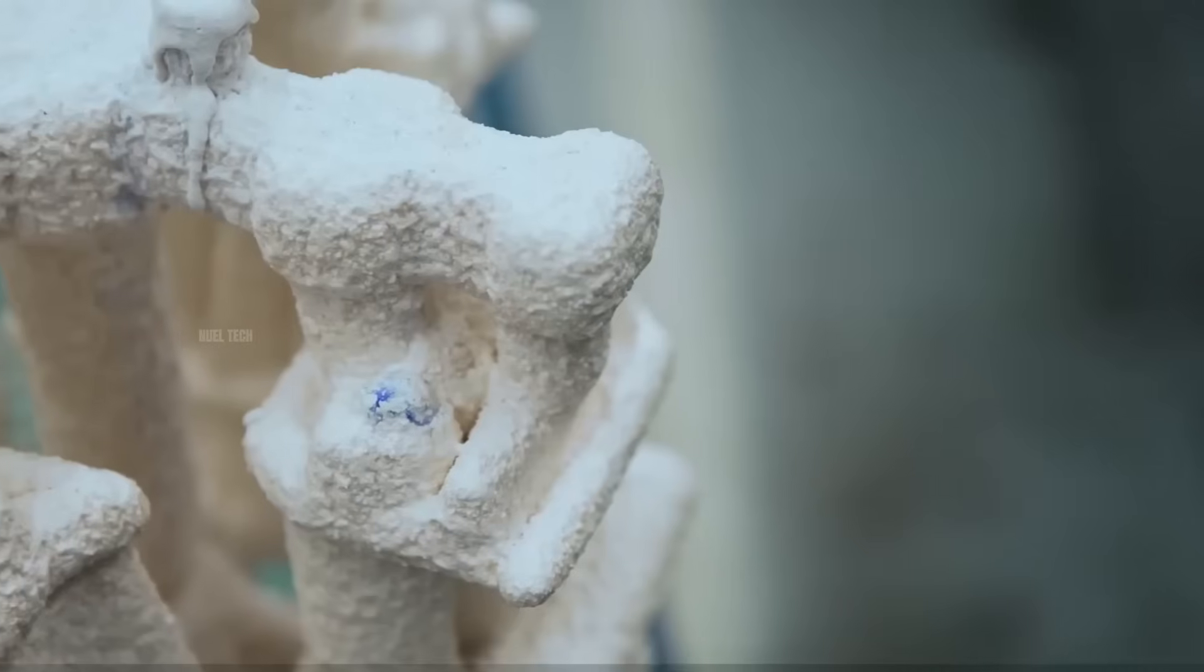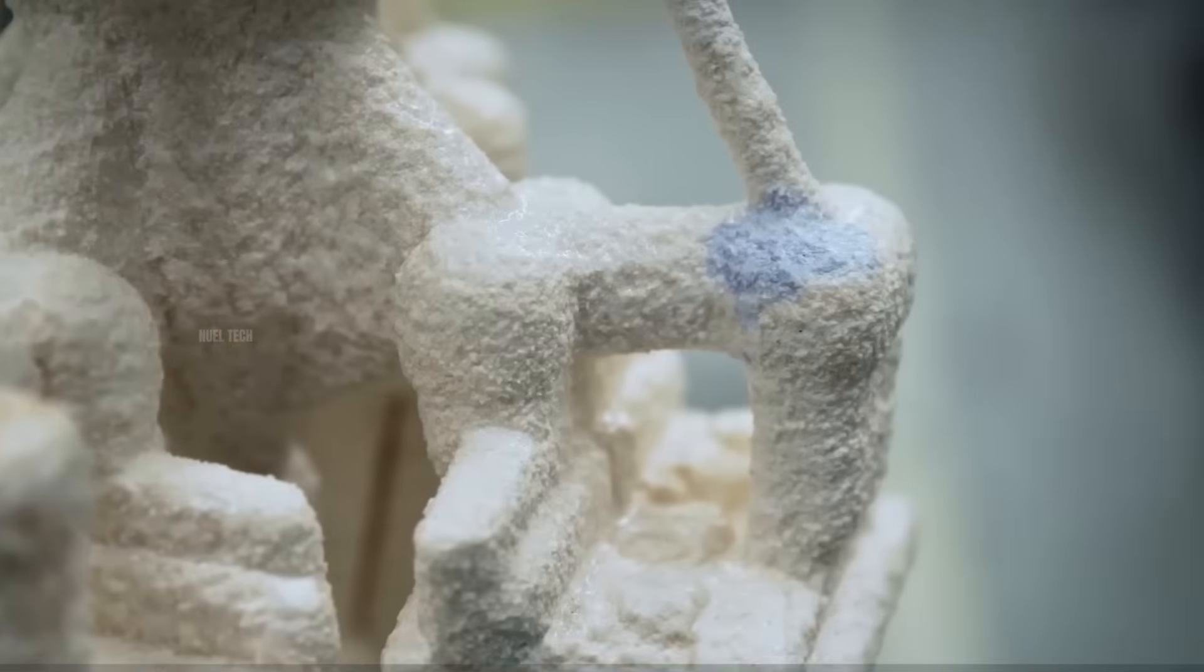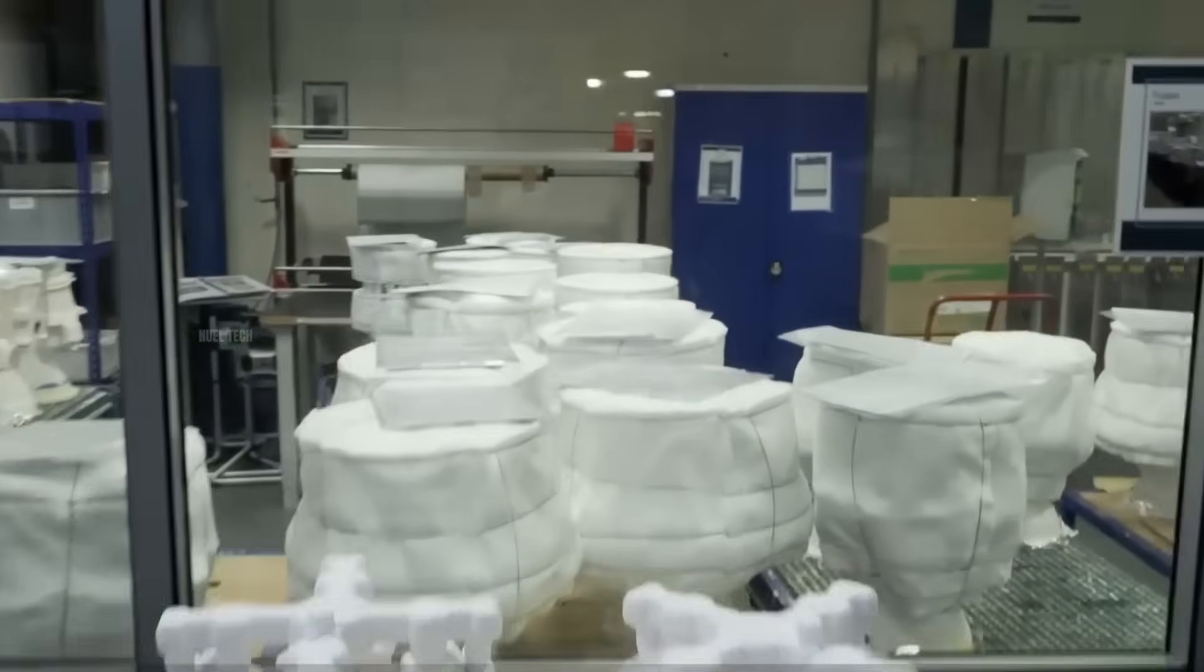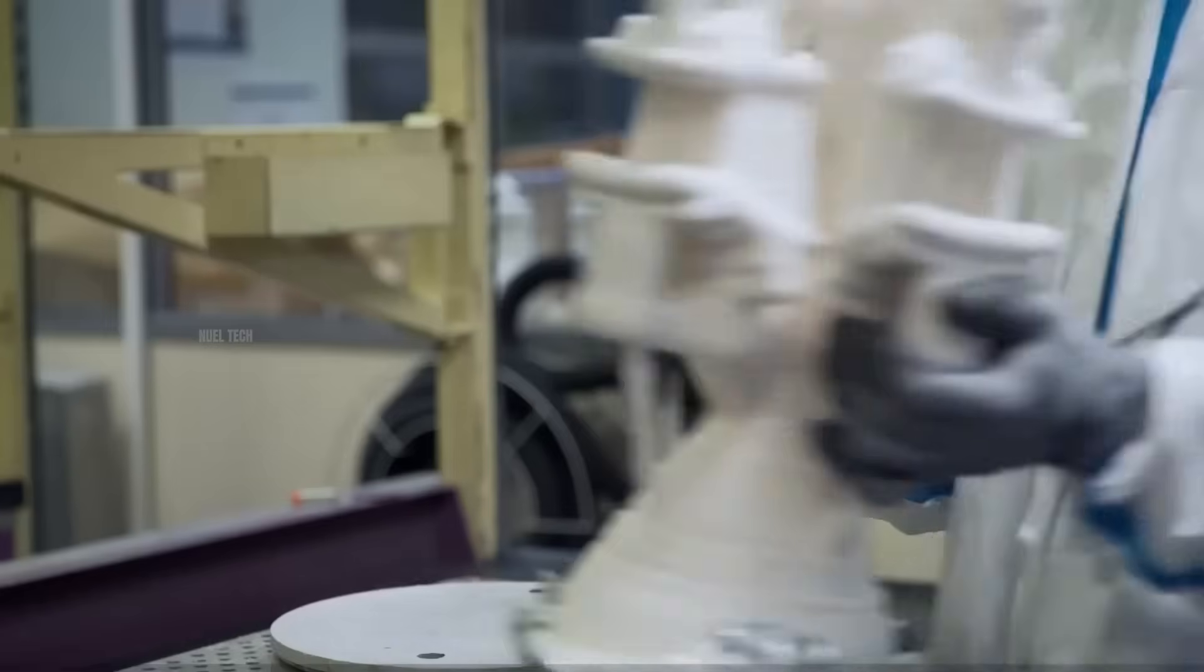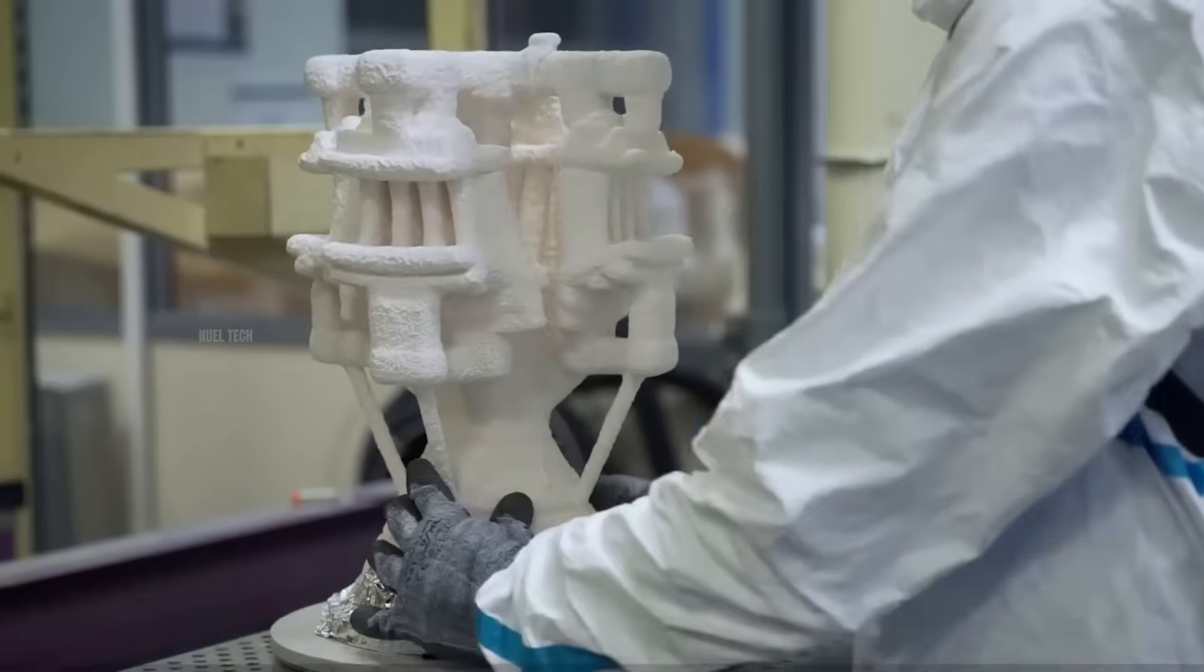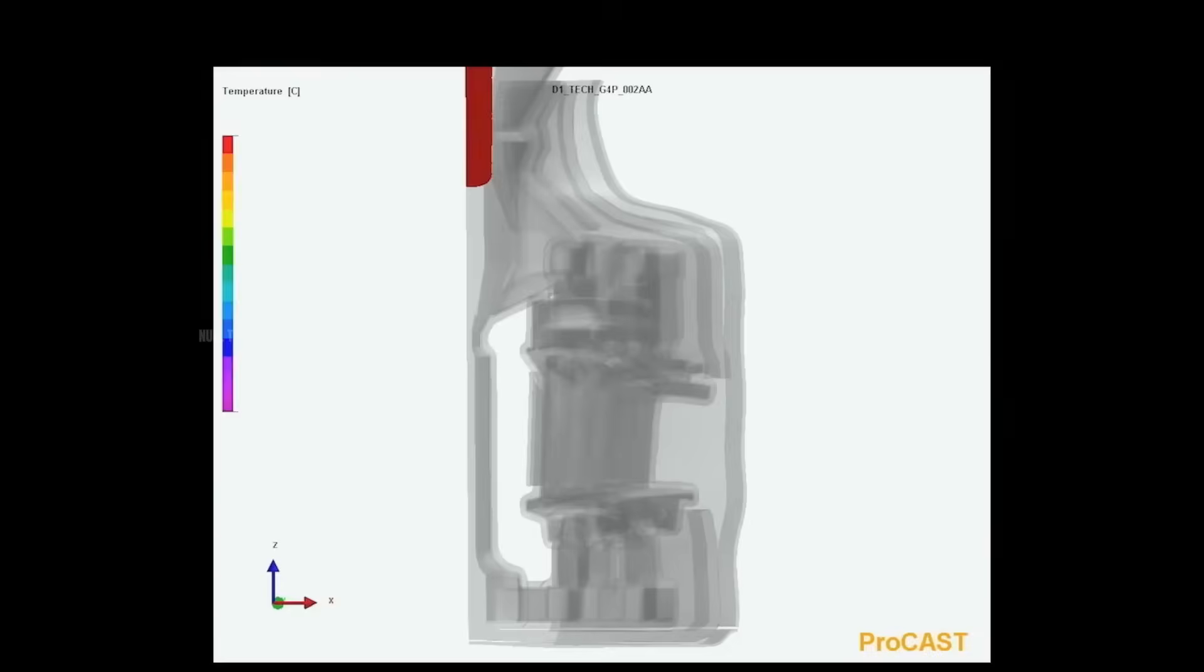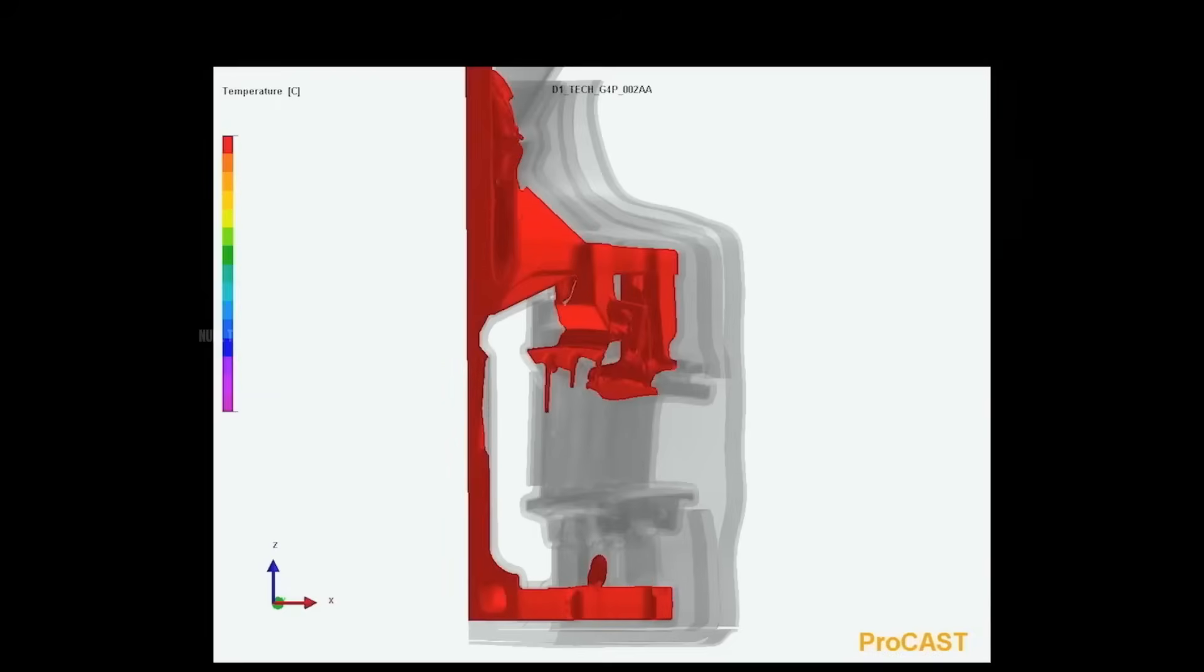If the mold passes inspection, it is wrapped in ceramic fiber insulation to prevent the molten metal from cooling too rapidly, which could cause internal cracks. The superalloy metal is then melted under an inert atmosphere or in a vacuum to prevent oxidation.